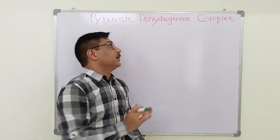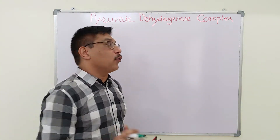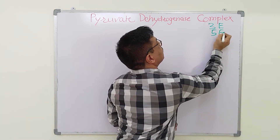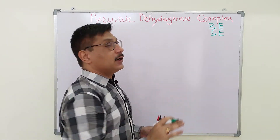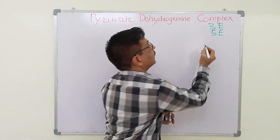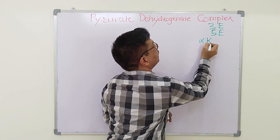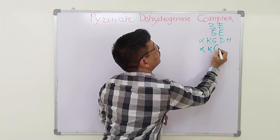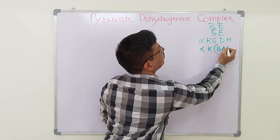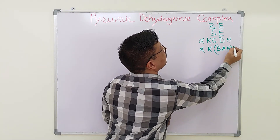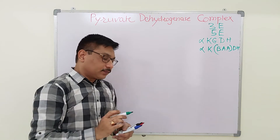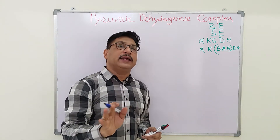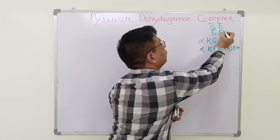Let us discuss the pyruvate dehydrogenase complex. This is a multi-enzyme complex consisting of three enzymes and five co-enzymes. Similarly, alpha-ketoglutarate dehydrogenase complex and alpha-keto acids of branched-chain amino acid dehydrogenase complex are also multi-enzyme complexes. All these multi-enzyme complexes require three enzymes and five co-enzymes.